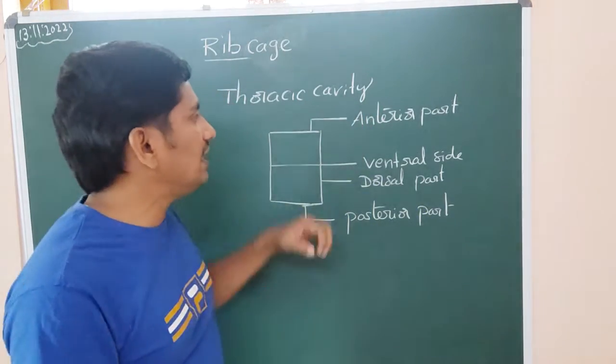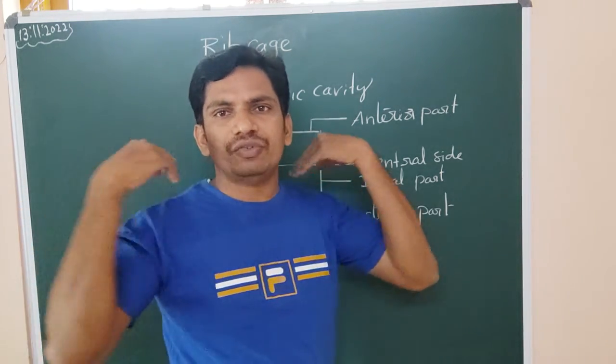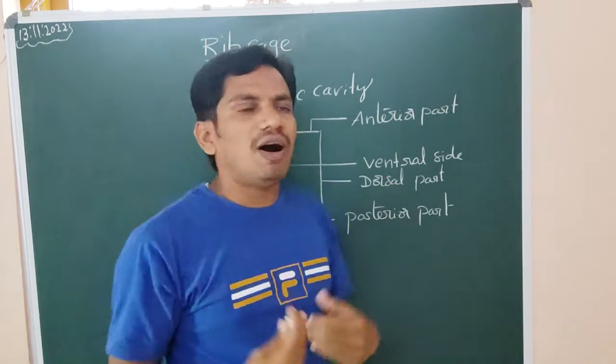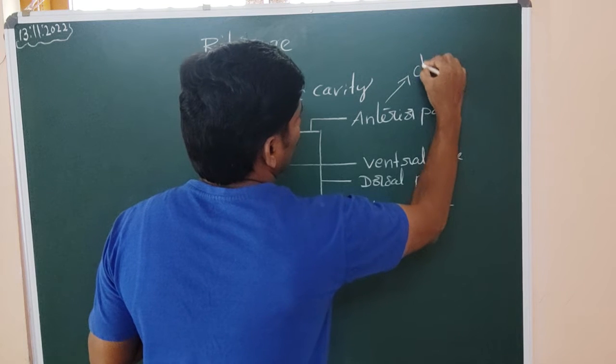Now ribcage is mainly formed from the anterior part, which is formed as - the main things are clavicle bone.